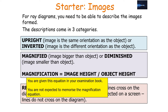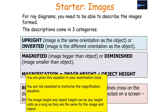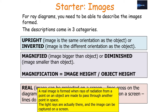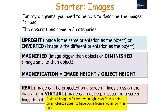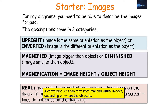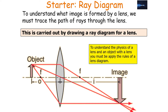Magnification is calculated as image height divided by object height — this equation is given in your examination booklet. Magnification has no units; it is a ratio. A magnification greater than one means the image is bigger than the object. A real image is formed when rays of radiation from a point actually pass through another point in space. A virtual image is formed when light rays appear to have come from another point — they cannot be captured on a screen. A converging lens forms a real image if the object is further than the focal length, and a virtual image if closer.